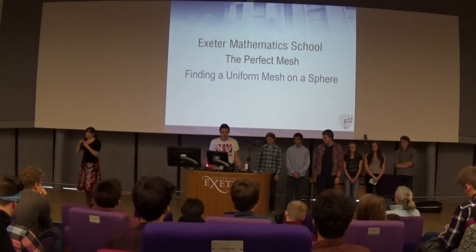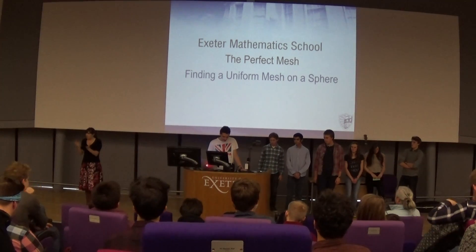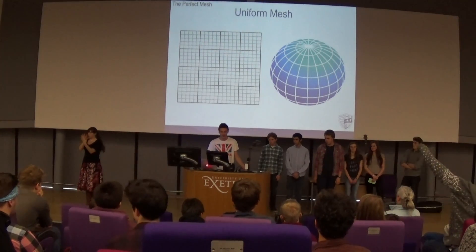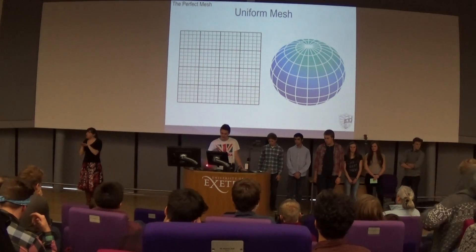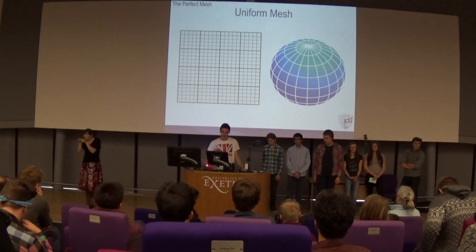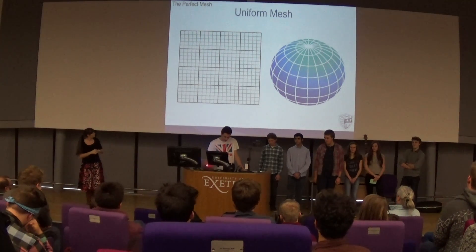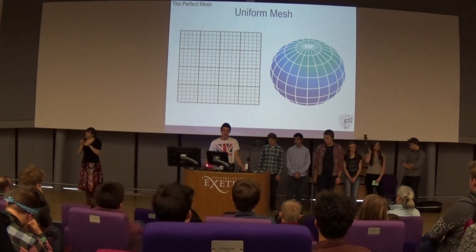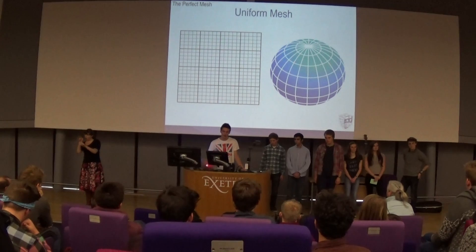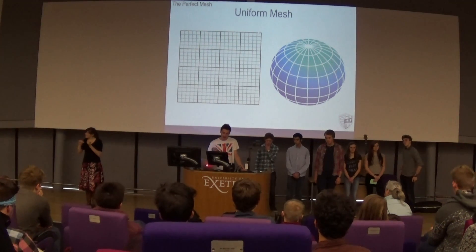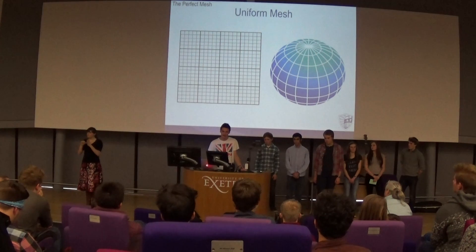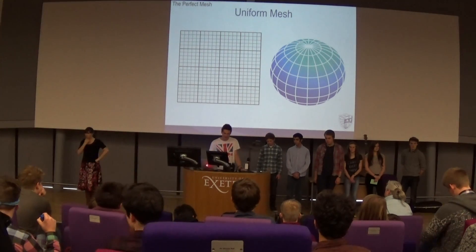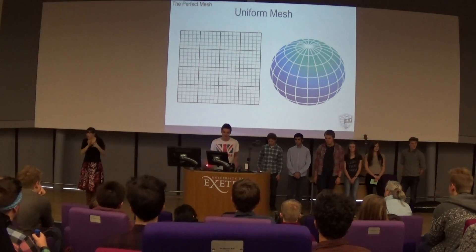So our project is on finding a uniform mesh on the sphere. The first thing we have to look at is actually what is a mesh — a mesh is a grid or a set of cells, as you can tell on the left. A uniform mesh is where all of these cells are the same size. We do actually have a method for doing this at the moment called the longitudinal-latitudinal system, but the problem is the cells get much smaller towards the poles, so it's non-uniform, and this non-uniformity means that current weather predictions aren't very accurate — they're about as accurate as if you looked out the window and took an educated guess.